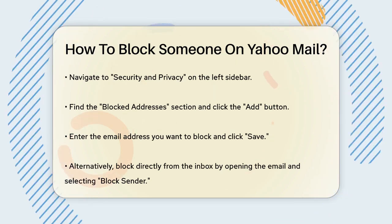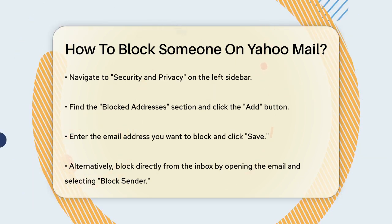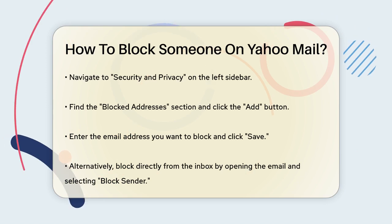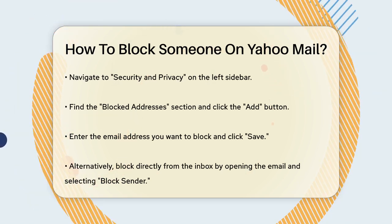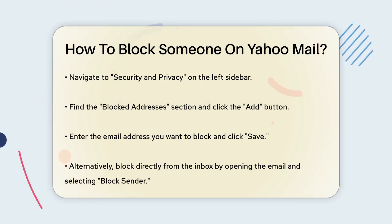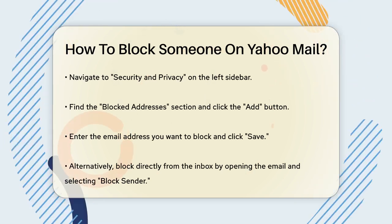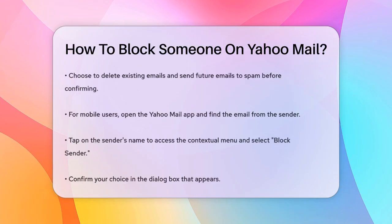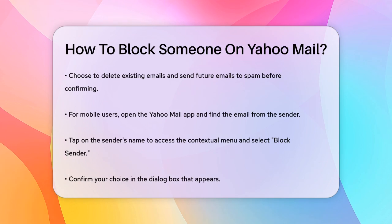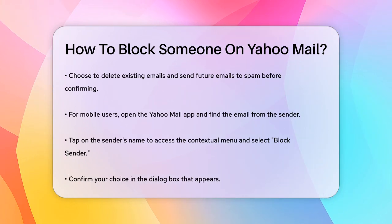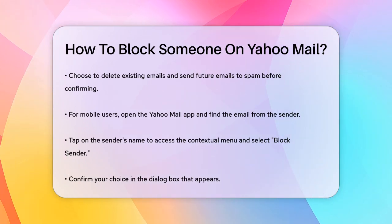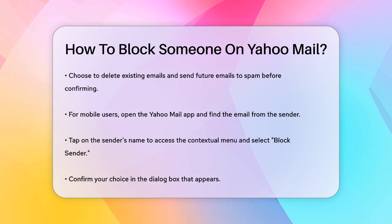If you're using the Yahoo Mail app on your mobile device, the process is a bit different. Open the Yahoo Mail app, find the email from the sender you want to block, and open it. Tap on the sender's name or profile to enter a contextual menu, then select Block Sender.